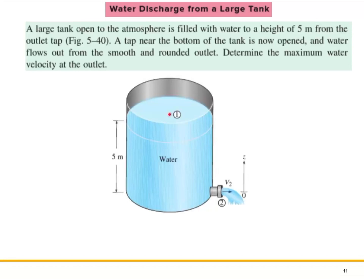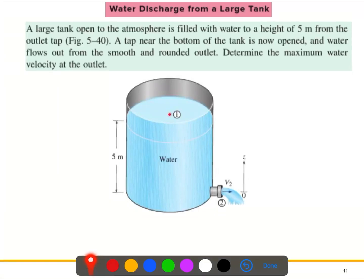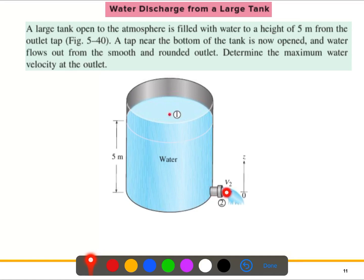This is the water discharge from a large tank. The tank is open at the top surface, open to the atmosphere, and filled with water. Point one is at the free surface, and the water height from the bottom is five meters. The outlet tap is located at the bottom of the tank.